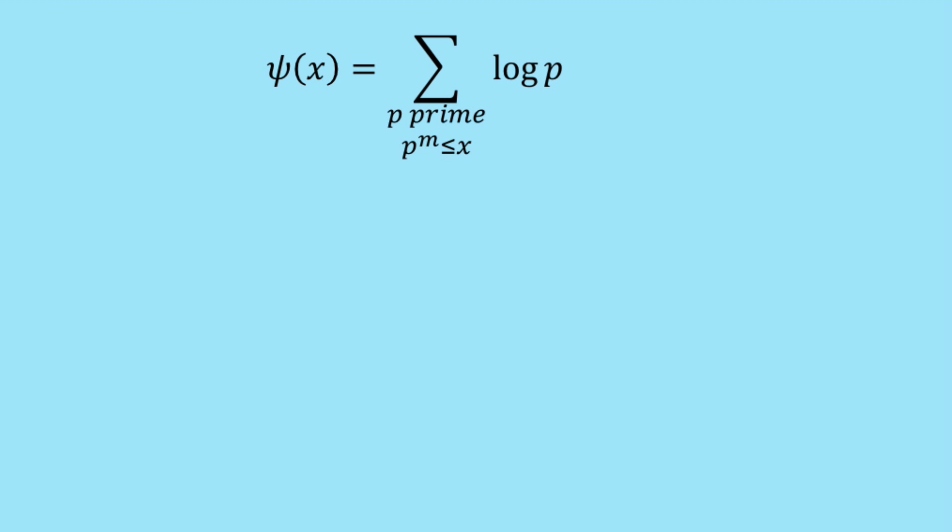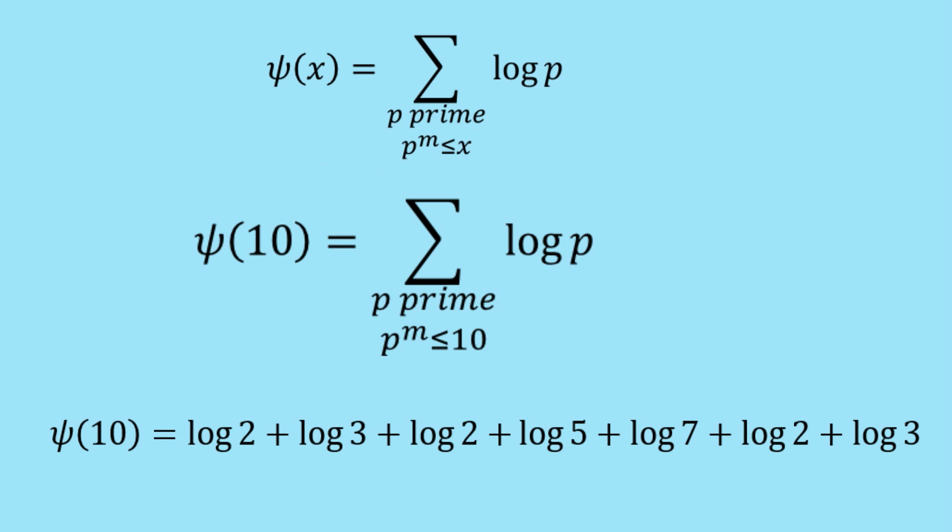So the next step was to create a new function, psi of x. And this time psi of x is the sum of, for all primes p, where p to the power m is less than or equal to x, of log p. So in this case, we're summing every prime power. So let's have a look at how this works. What's psi of 10? Well, it's a sum for p prime p to the power of m less than or equal to 10 of log p. So you can see this is similar to theta(x).